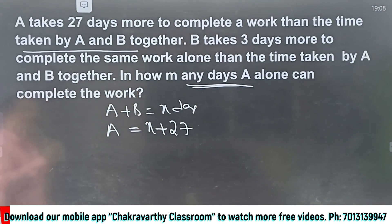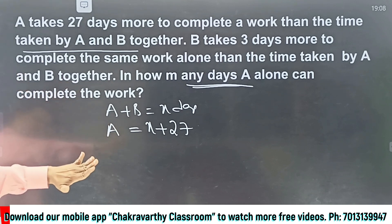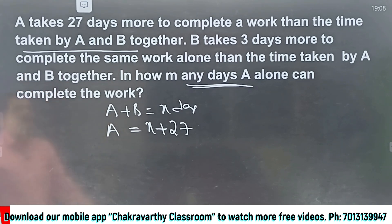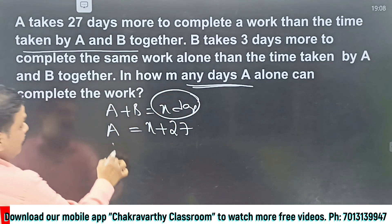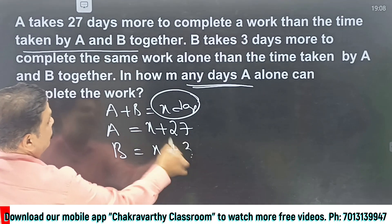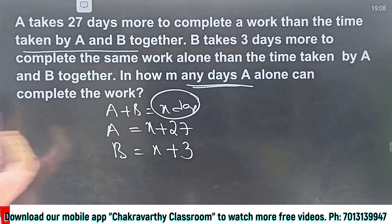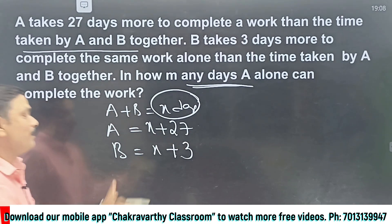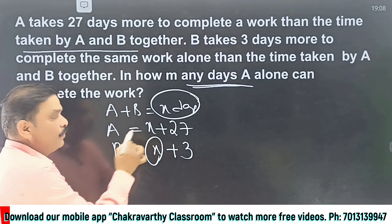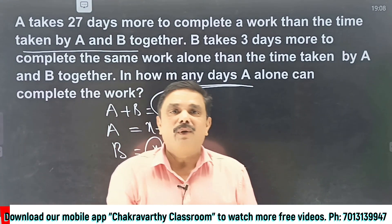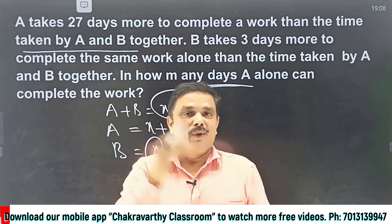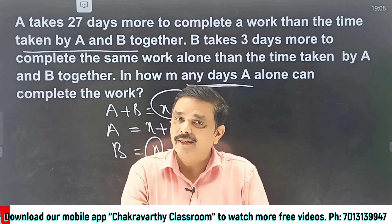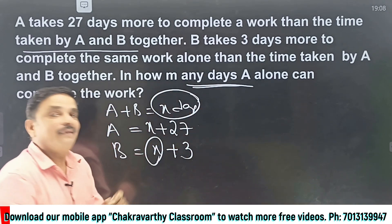Similarly, they have given one more clue about B. B takes 3 days more to complete the same work alone than the time taken by A and B together. A and B already take X days, so B must take X plus 3. This is exactly what they have given. If we are able to find out the value of X, then finding out how many days A alone or B alone can do the work is a cake walk for us.